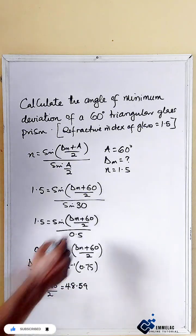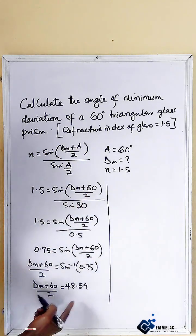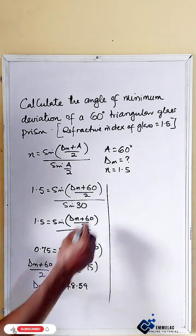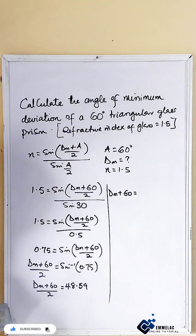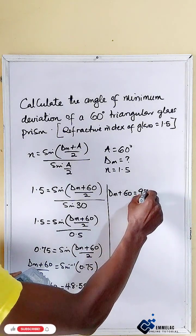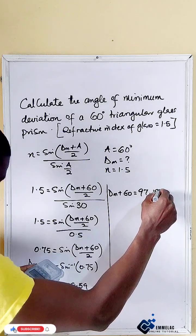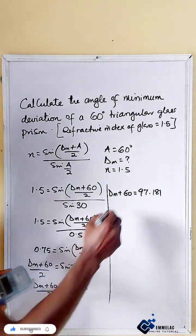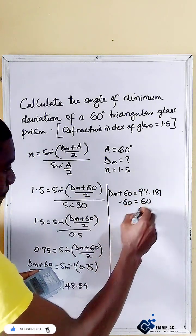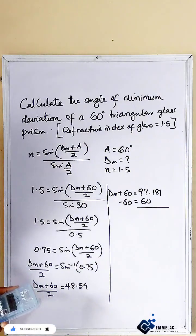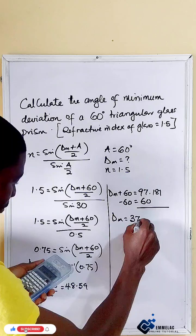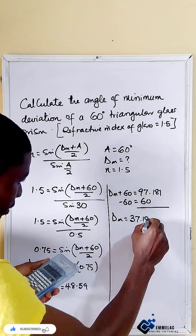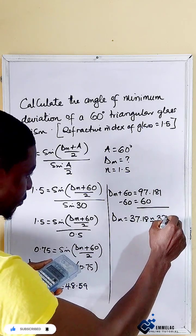At this point when we cross-multiply by 2 on both sides, we have dm plus 60 equals 2 times 48.59, which gives us 97.18. Subtracting 60 from both sides, we get dm equals 37.18 degrees, so approximately 37.0 degrees.